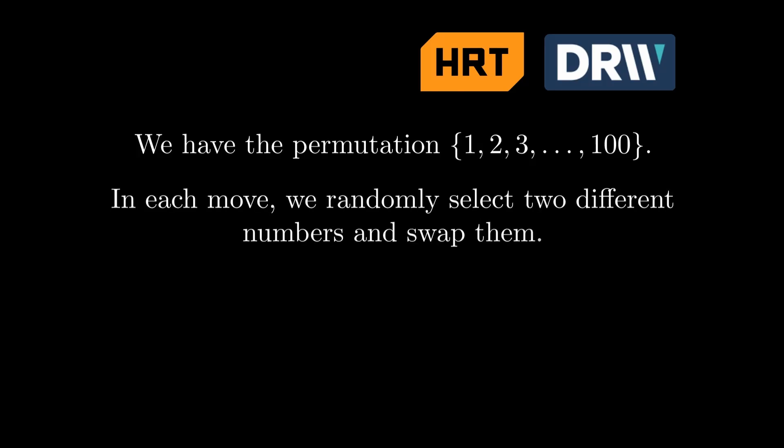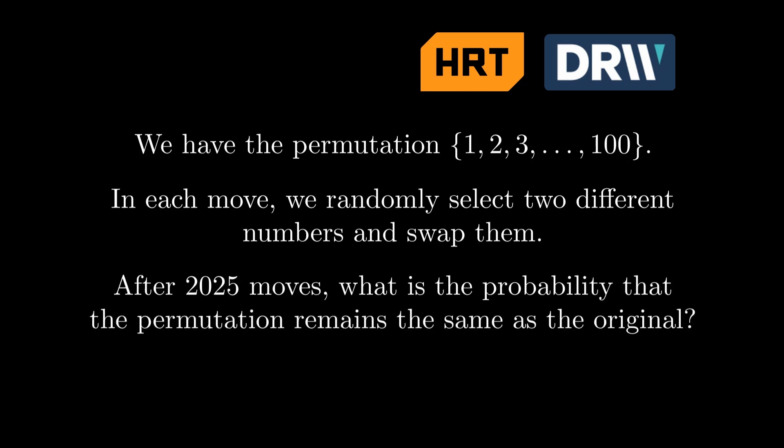Let's consider another problem. We have the permutation 1, 2, 3, and so on till 100. In each move, we randomly select two different numbers and swap them. After 2025 moves, what is the probability that the permutation remains the same as original? Try to solve this on your own.